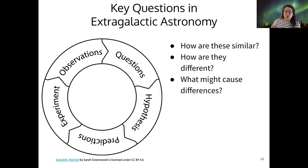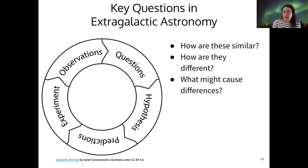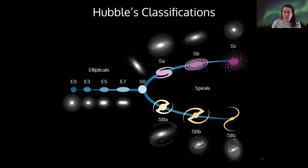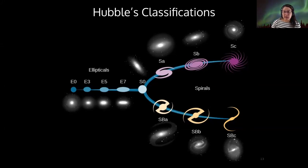The key questions Hubble used in this new field of extragalactic astronomy were: how are these galaxies similar, how are they different, and what might cause some of the differences? With these questions, Hubble developed a classification system we still use today. Some people call it Hubble's tuning fork because of its shape — elliptical galaxies on the handle, with the two forks representing spirals and barred spirals.